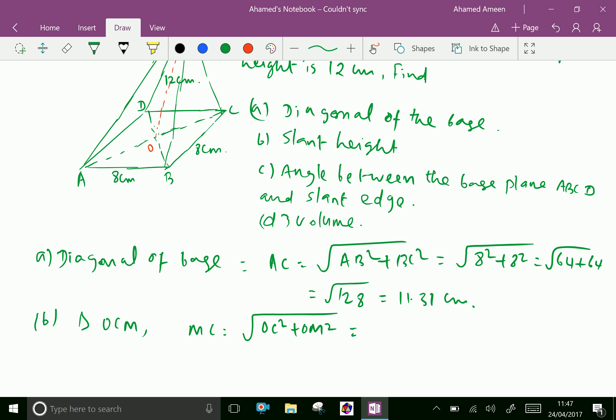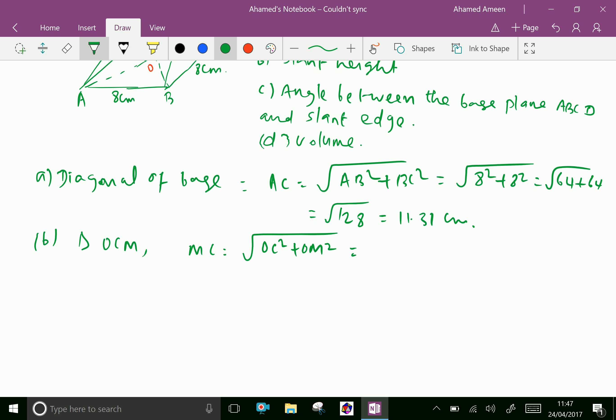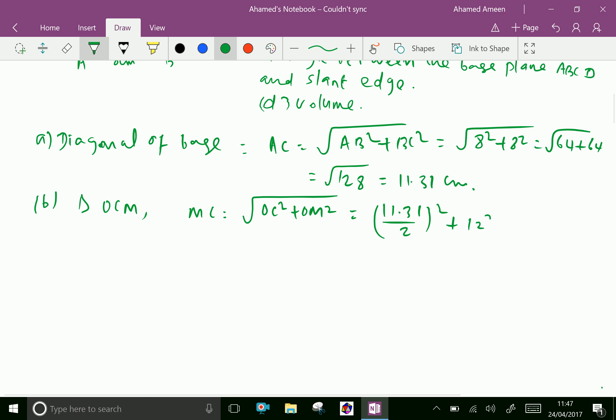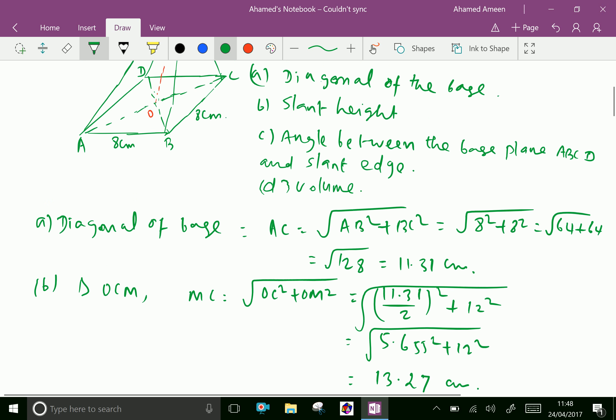Now OC is already half of AC, means 11.31 divided by 2, whole squared, plus OM is 12 squared. 5.655 squared plus 12 squared. That is the slant height.